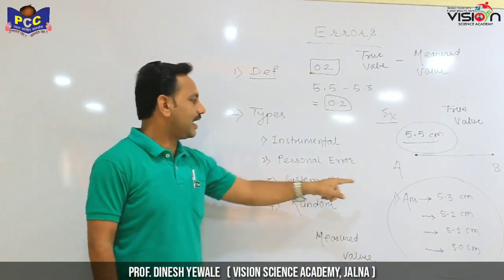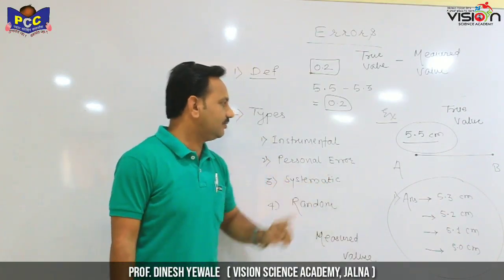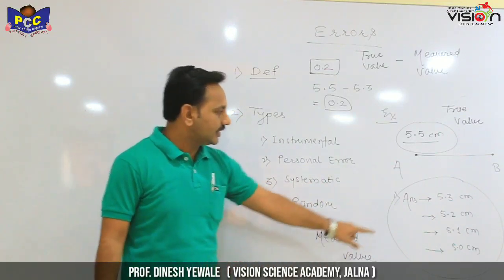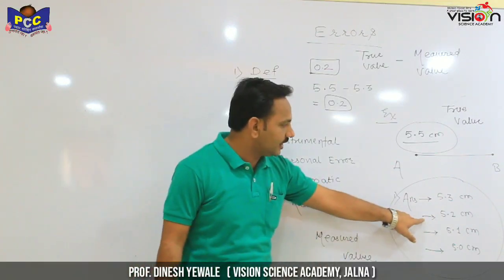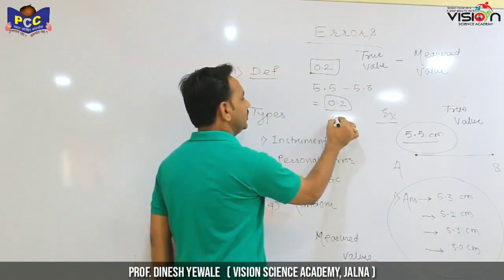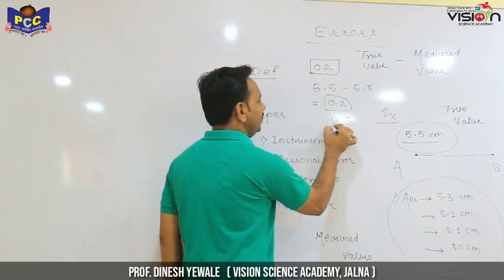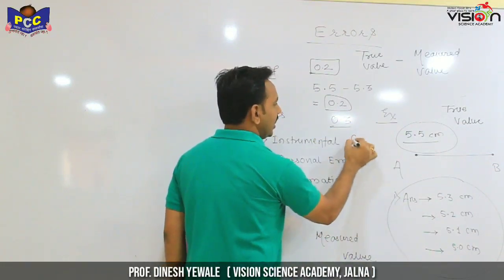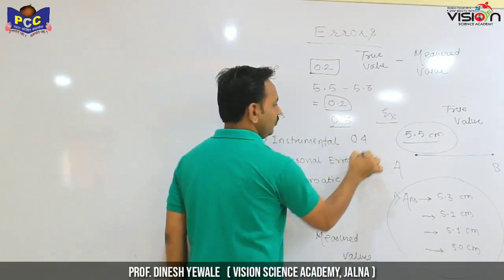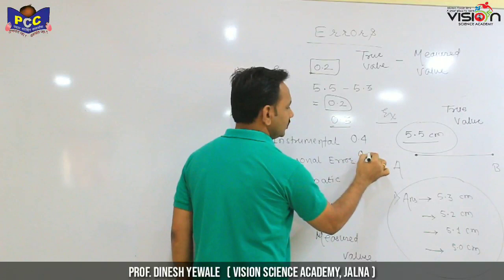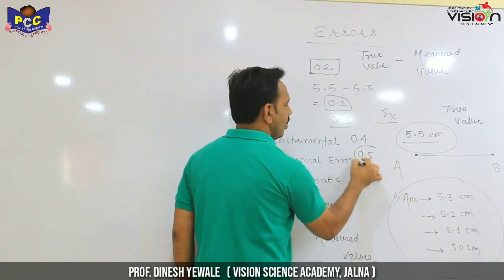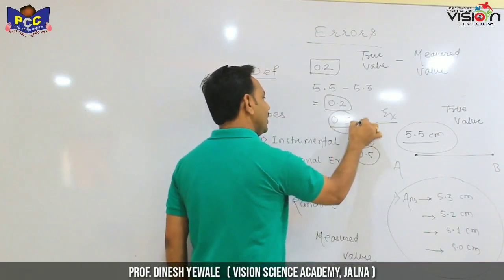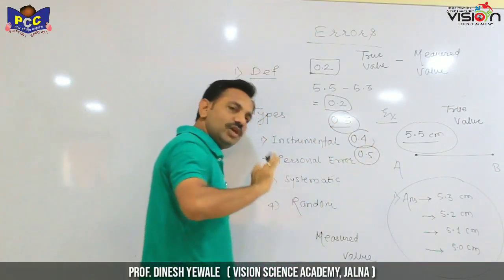The first error is 0.2, the second error is 0.3, the third error is 0.4, and the last error is 0.5.